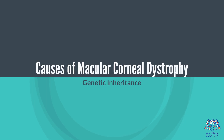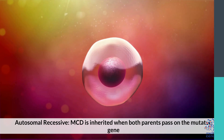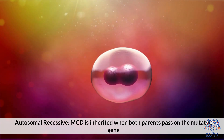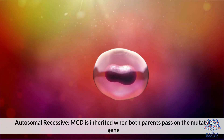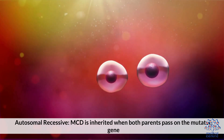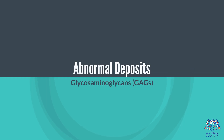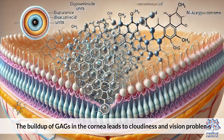Causes of Macular Corneal Dystrophy include genetic inheritance through an autosomal recessive pattern, meaning MCD is inherited when both parents pass on the mutated gene. Abnormal deposits of glycosaminoglycans (GAGs) build up in the cornea, leading to cloudiness and vision problems.